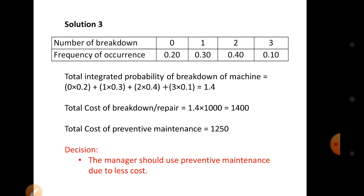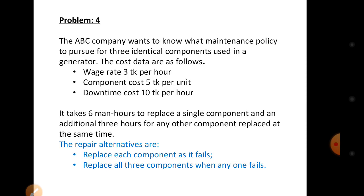That is the solution to problem 3. Now for problem 4: the ABC company wants to know what maintenance policy to pursue for 3 identical components used in a generator. The cost data are as follows — wage rate: $3.00 per hour; component cost: $5.00 per unit; downtime cost: $10.00 per hour.